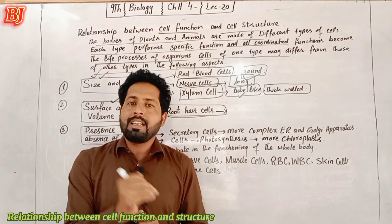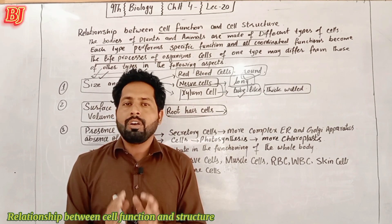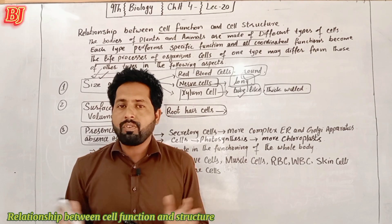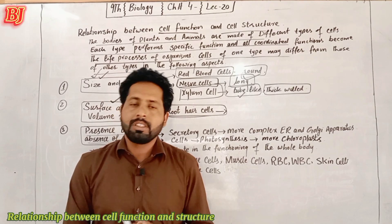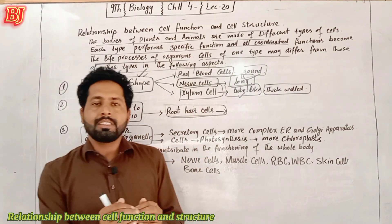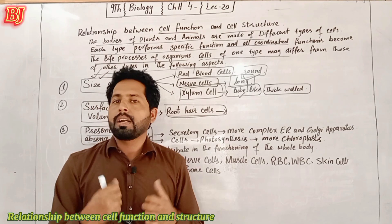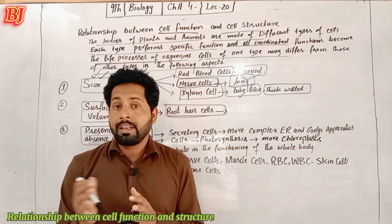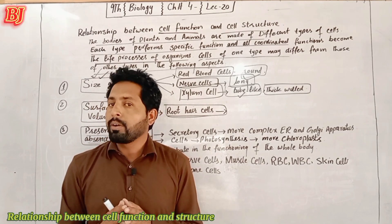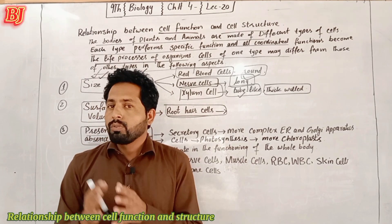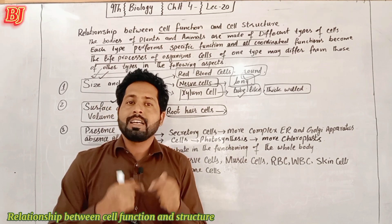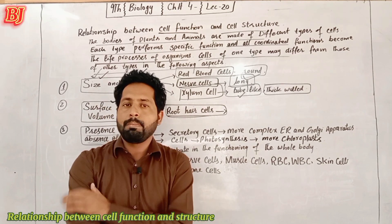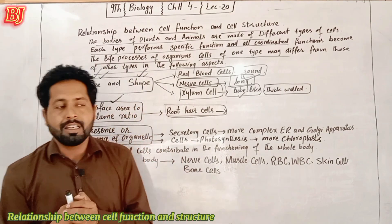Now, other cells are not all the same type. There are different types of cells. Just like that, if you have a cell, you can use the mitochondria. It can be used in that cell, or you can use the mitochondria in addition to the cell.